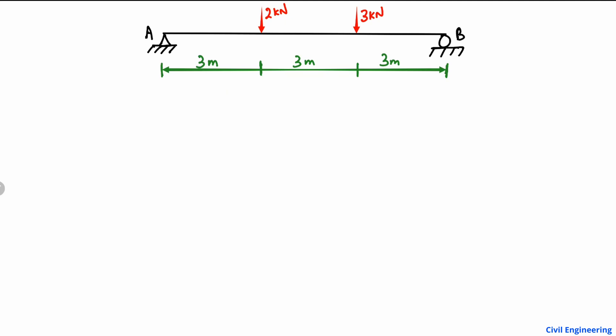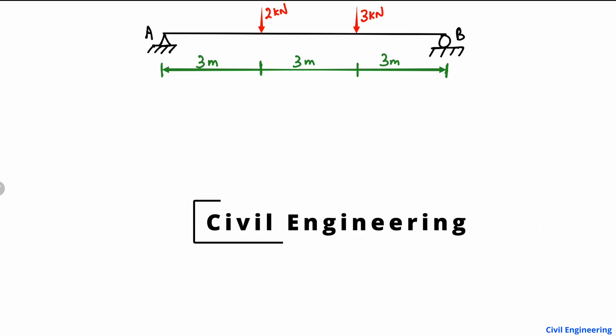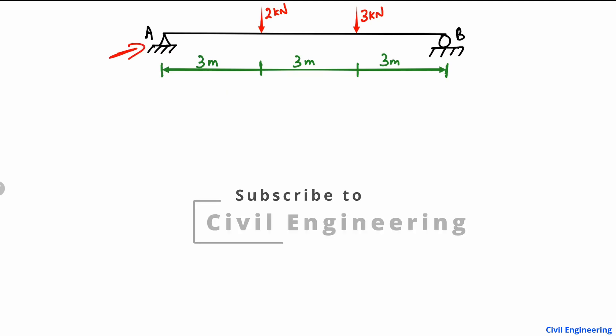To analyze this beam, we know it is a simply supported beam, so there is a hinge support on the left side and a roller support on the right side. These two supports take the vertical loads acting on the beam. There is a 2 kilonewton load acting at 3 meters from the left end, and a 3 kilonewton load acting at 3 meters from the right end.